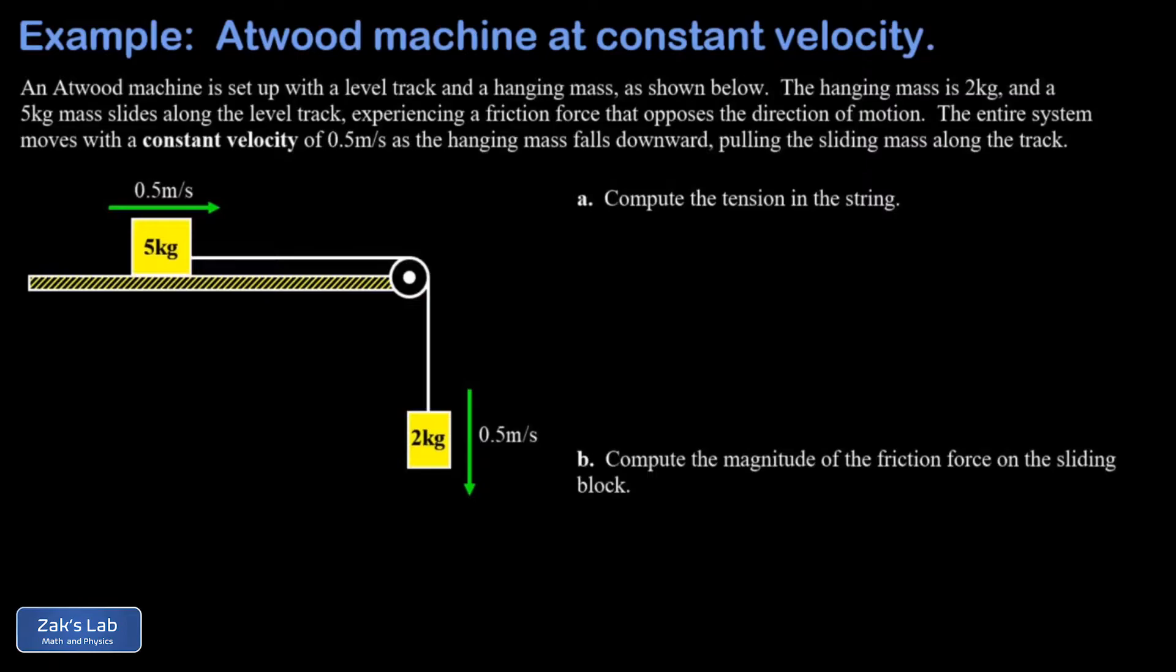But this is a really special case of an Atwood machine. We're told this one moves at constant velocity, and the only reason this is possible is because we have some unknown friction force acting on the five kilogram block that's sliding along the track. We'll call that f with a subscript of k, standing for kinetic friction.